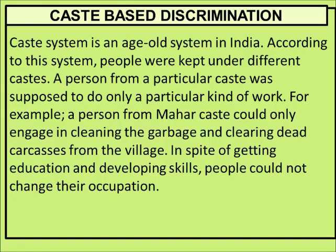Next is caste-based discrimination. In Hindu mythology we have four castes: Brahmin, Kshatriya, Vaishya, and Shudra, each with different roles. Brahmins are supposed to do worship; Kshatriyas are supposed to rule and do wars; Vaishyas are supposed to do business; and Shudras are supposed to do smaller work like cleaning and assisting. There is one community called Mahara — an untouchable community of Maharashtra — who were supposed to clean the village, collect garbage, and clear dead animals.